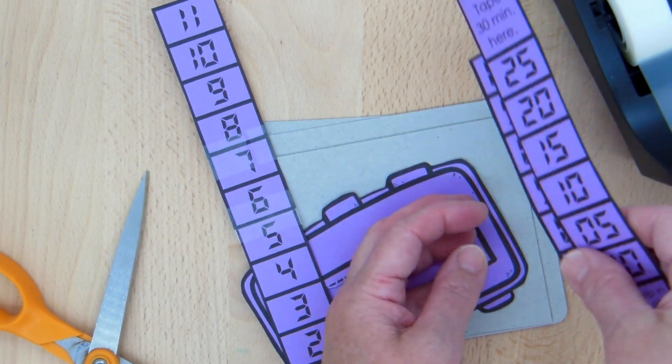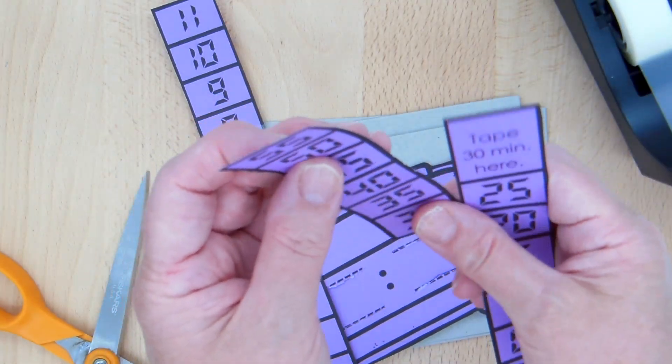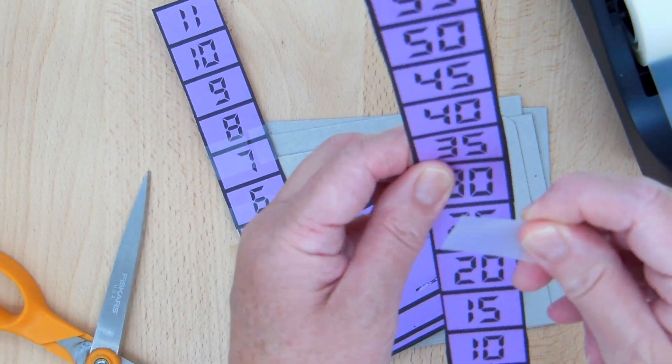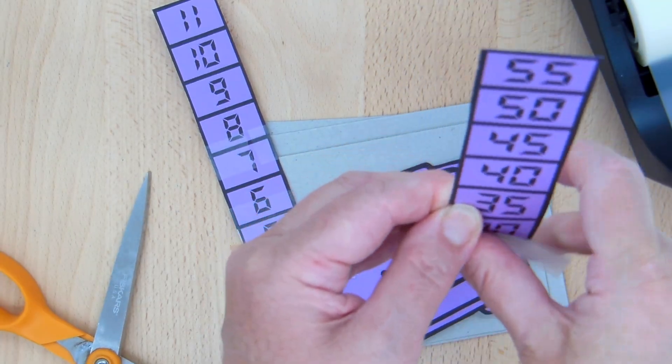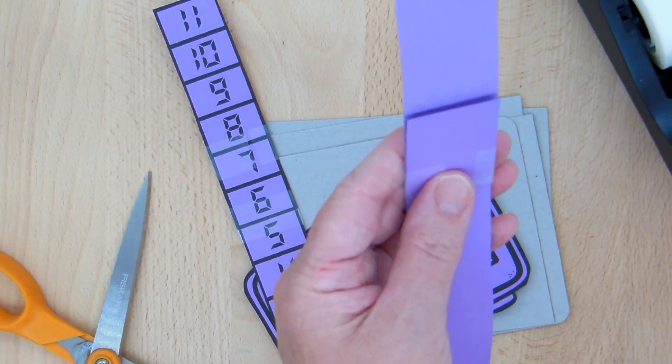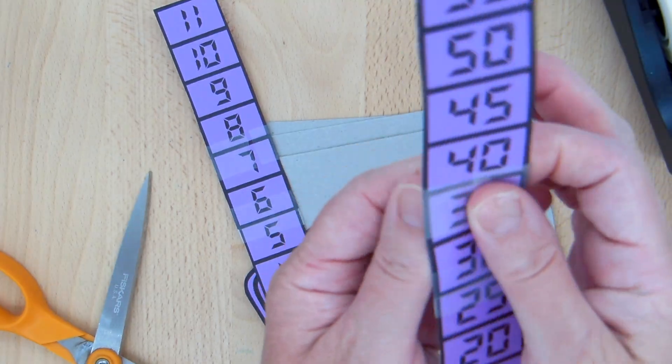Now I'm going to assemble my minutes which are for every five minutes and I'm going to put the 30 up above the 25. And I'm going to do the same thing. I need to fasten this so it does not catch.